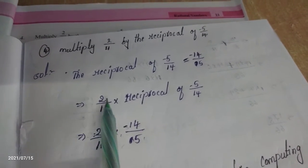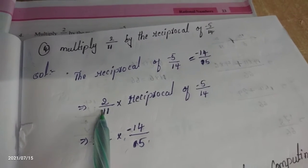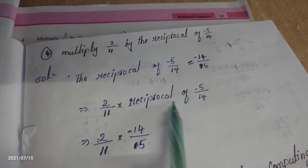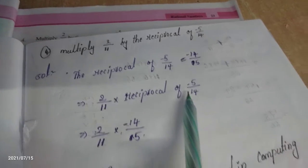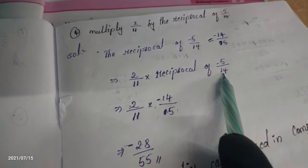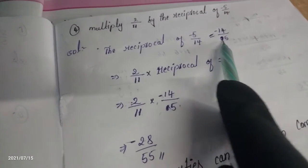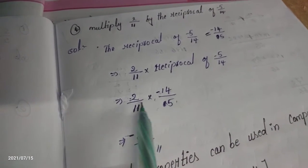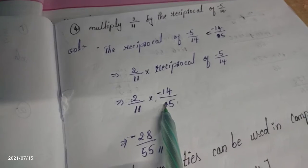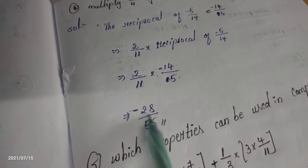So the question is: multiply 2 by 11 by the reciprocal of minus 5 by 14. We have 2 by 11, and we multiply it by the reciprocal of minus 5 by 14, which is minus 14 by 5. There is no common term or common factor to cut, so we do direct multiplication. 2 times 14 gives 28, with a minus sign.